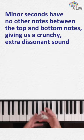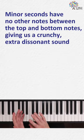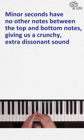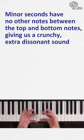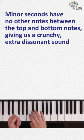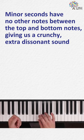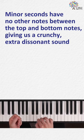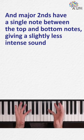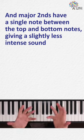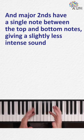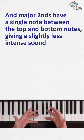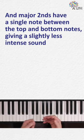Minor seconds have no other notes between the top and bottom notes, giving us a crunchy, extra dissonant sound. And major seconds have a single note between the top and bottom notes, giving a slightly less intense sound.